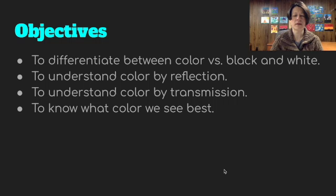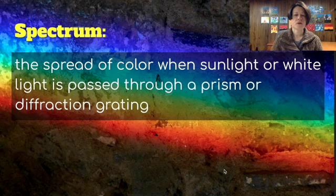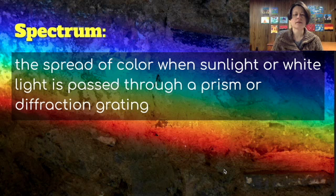Section 28.1, the color spectrum. A spectrum is a spread of color when sunlight or white light is passed through a prism or diffraction grating, basically the rainbow of colors.